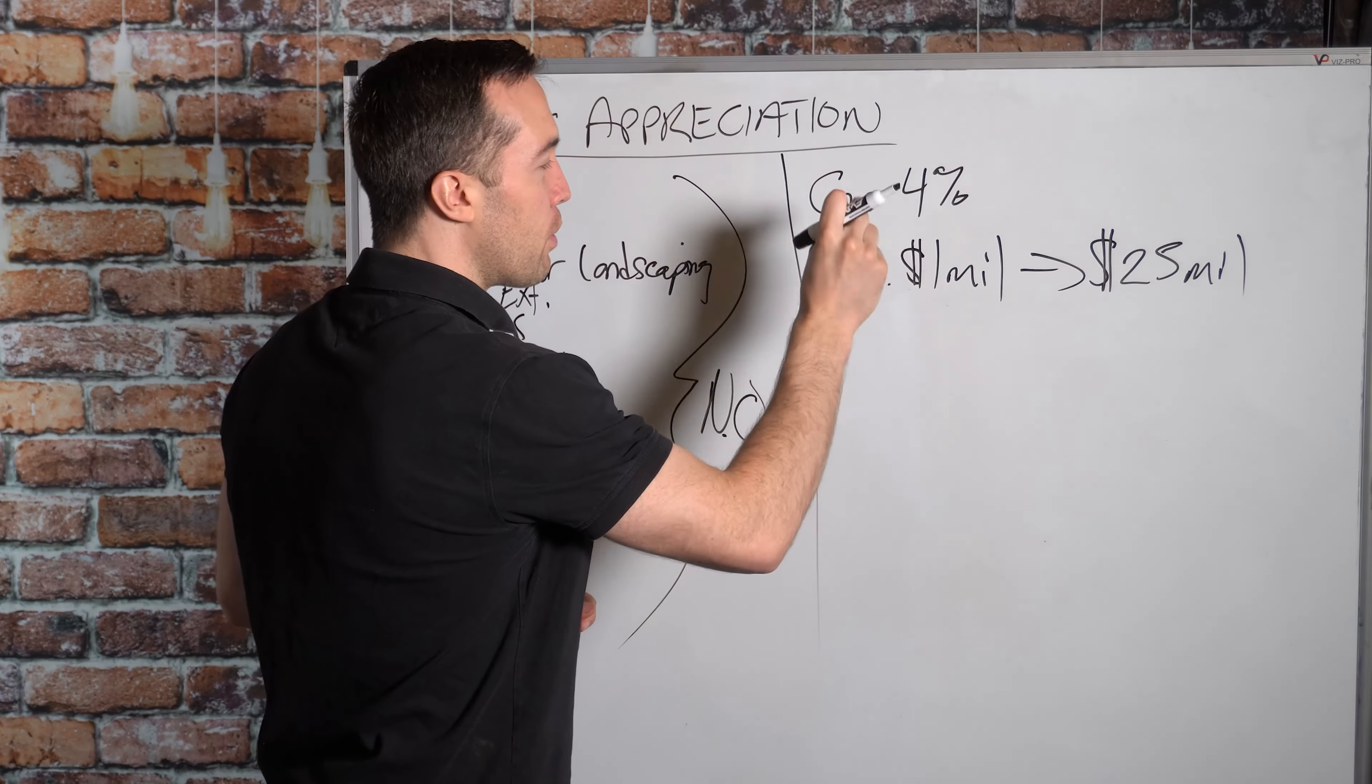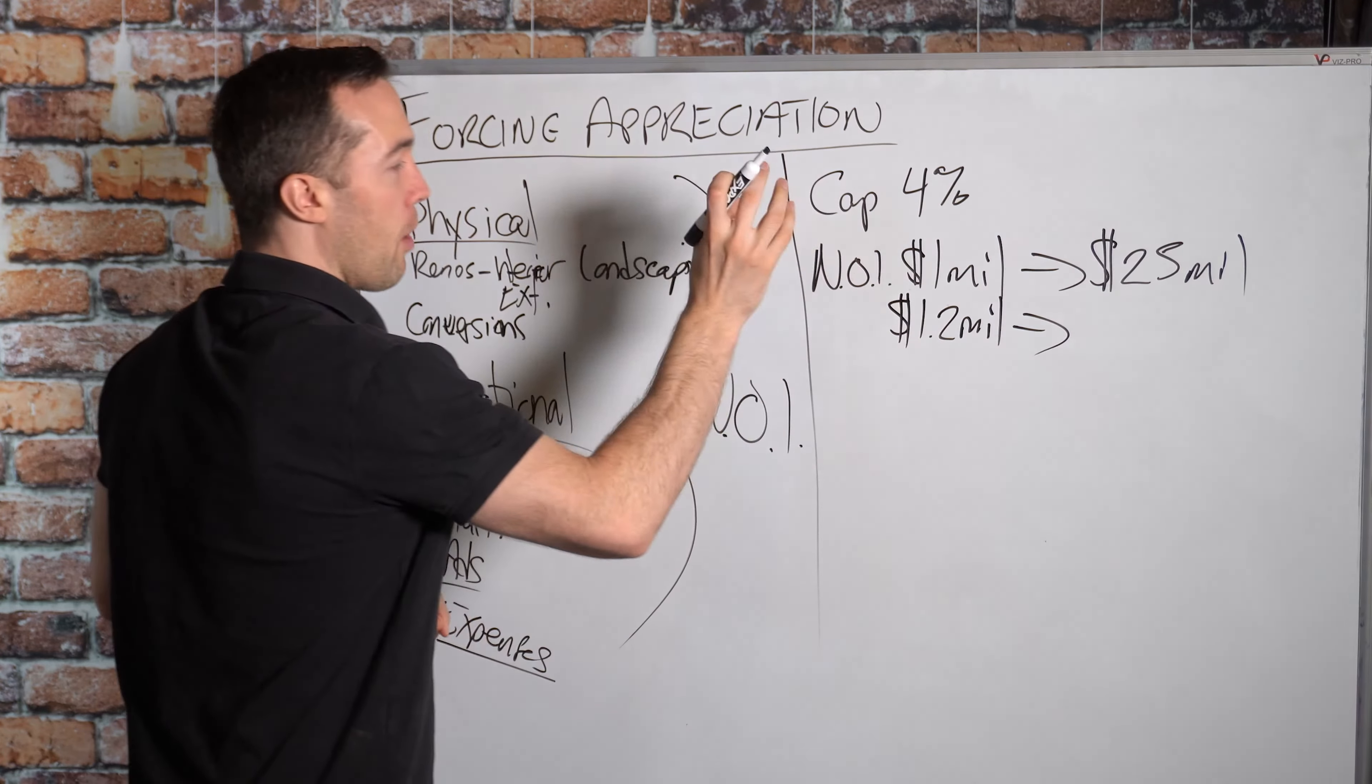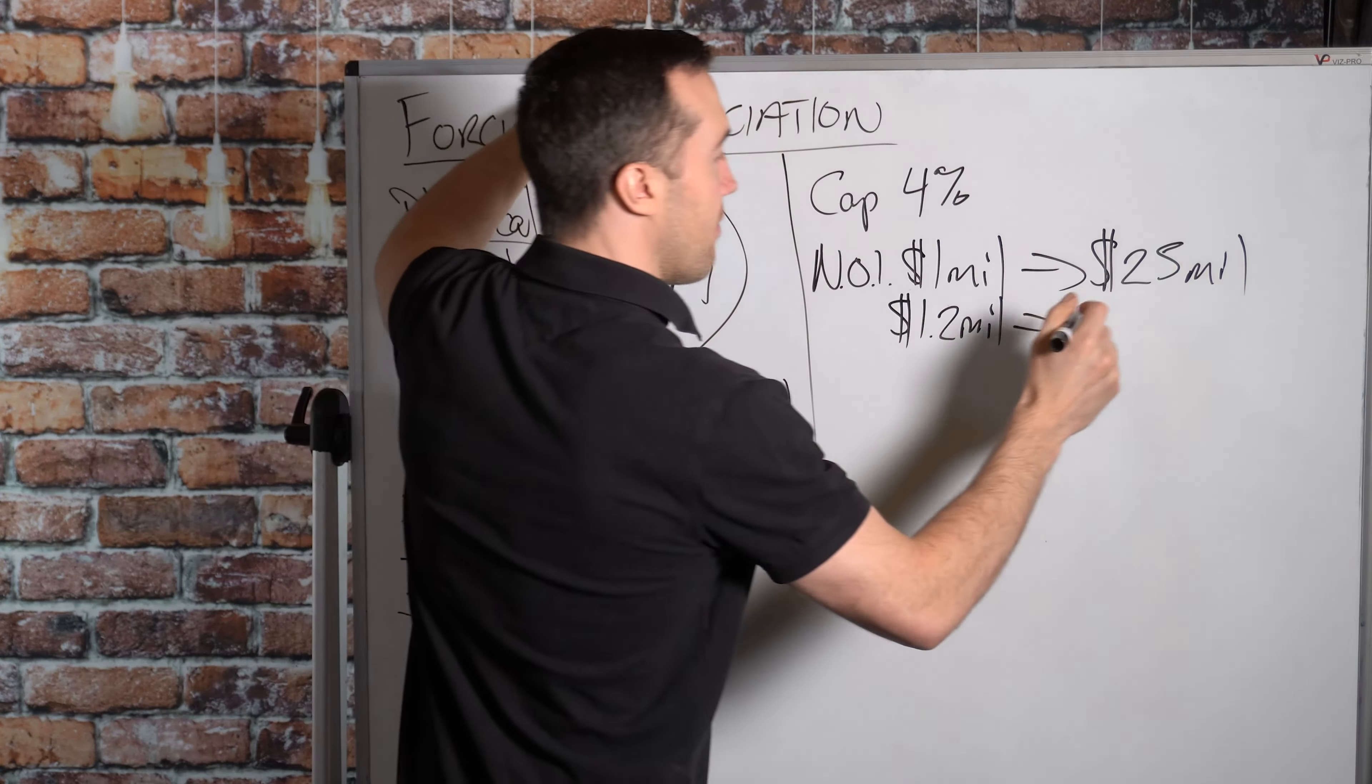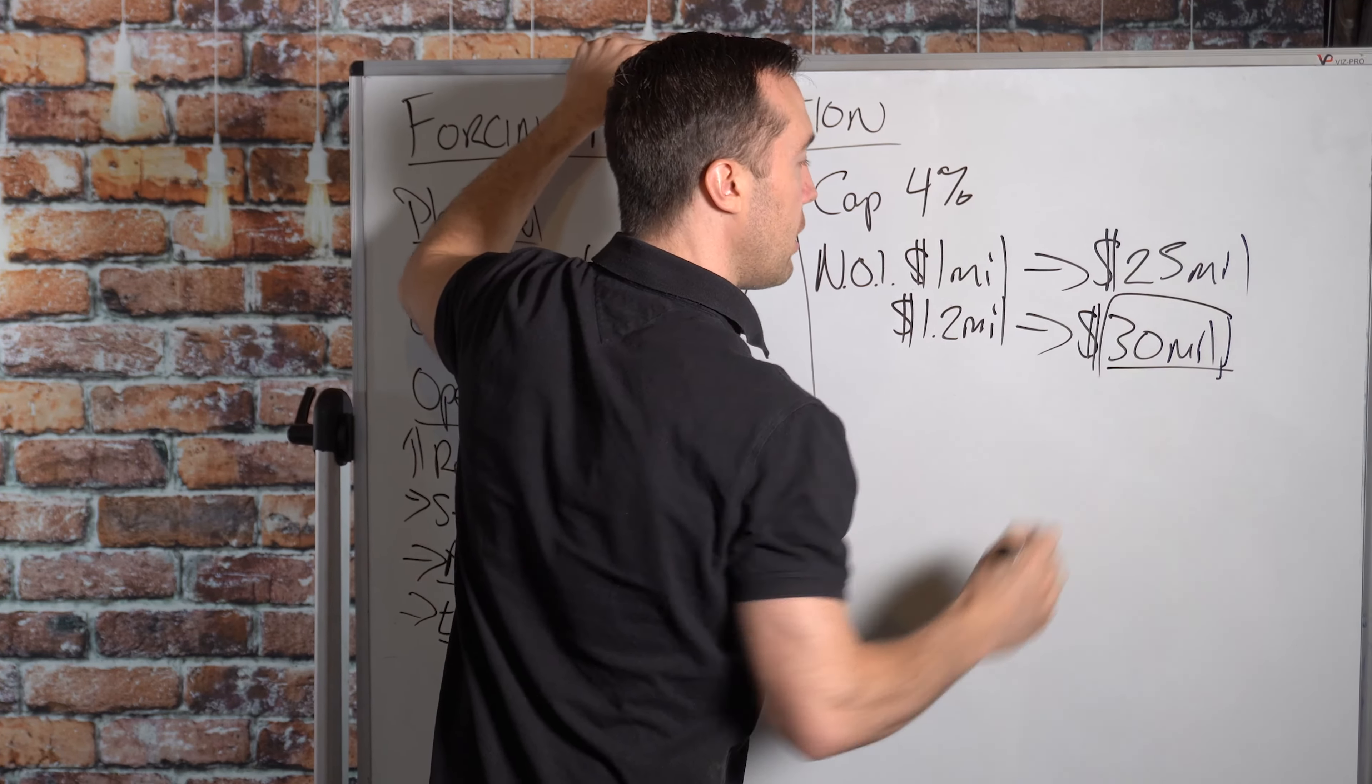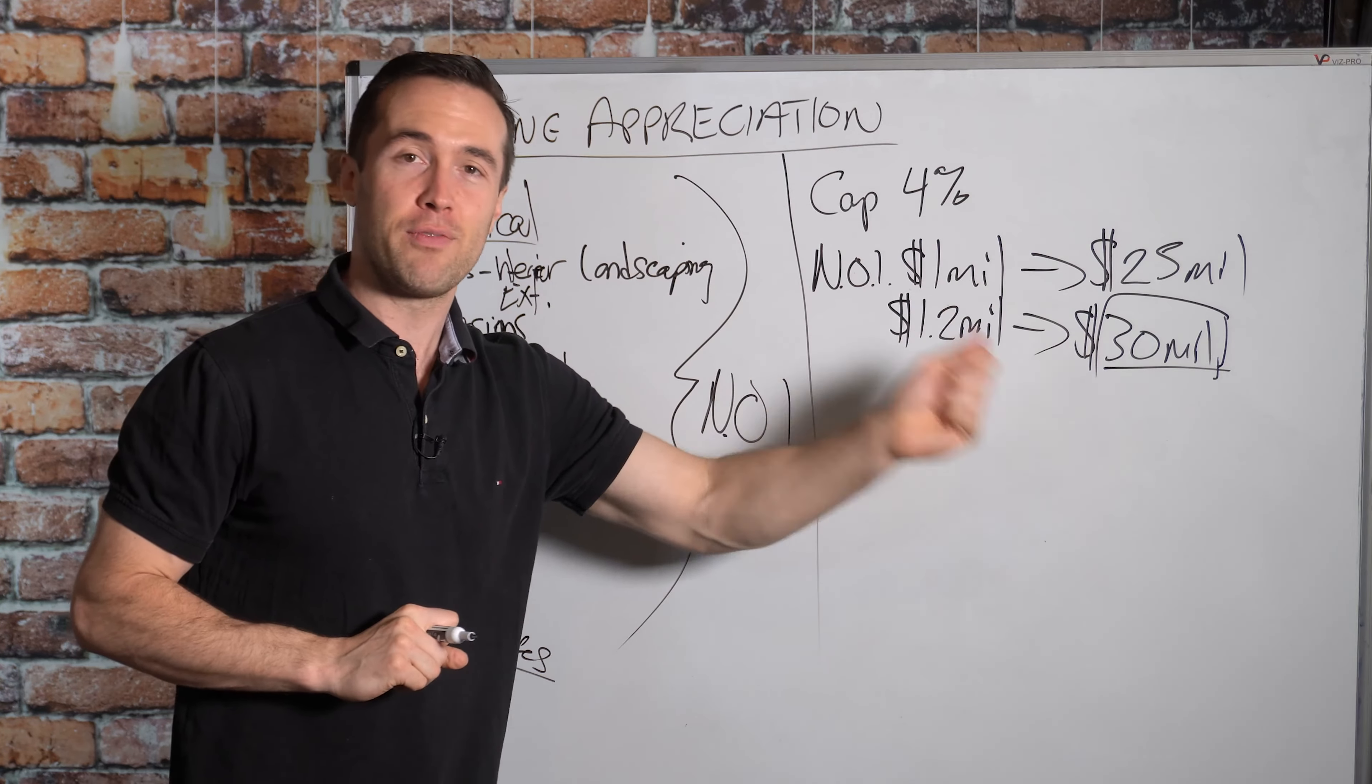Now, let's say we are able to improve our NOI of $1 million by 20%. So that will make it $1.2 million in NOI, which we are able to do. We have improved the NOI, cap rate stays the same at 4%. What is the impact on the valuation of our property? Well, the value of the property now goes from $25 million to $30 million. We have manufactured, we have forced the appreciation of the asset $5 million. So not only do we get to enjoy the increased NOI on a monthly basis, but we also have an increased value of the property by 5 million bucks.